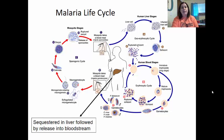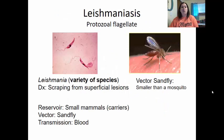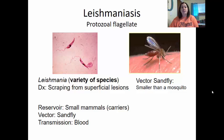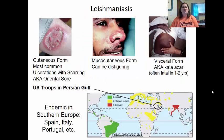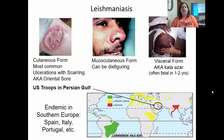Leishmaniasis is caused by flagellated Leishmania protozoa with a variety of species. The vector is the sandfly, which is smaller than a mosquito and can get through mosquito nets. Diagnosis is through scrapings from superficial lesions. The reservoir is small mammals. There are different forms: the cutaneous form is most common, causing deep ulcerations known as oriental sores that result in scarring. The mucocutaneous form gets into mucous membranes and can be disfiguring. The visceral form, known as kala-azar, is often fatal in one to two years as it gets into internal organs.